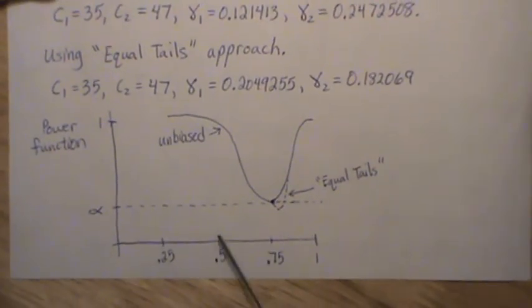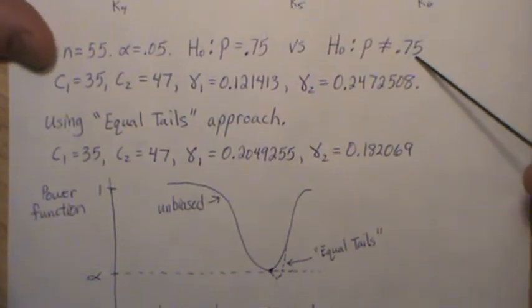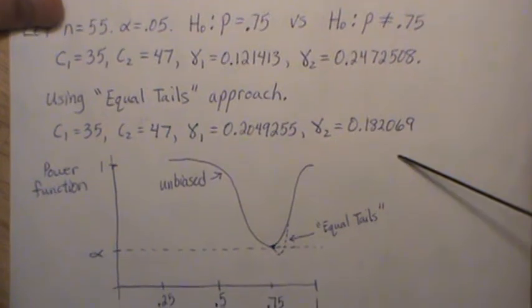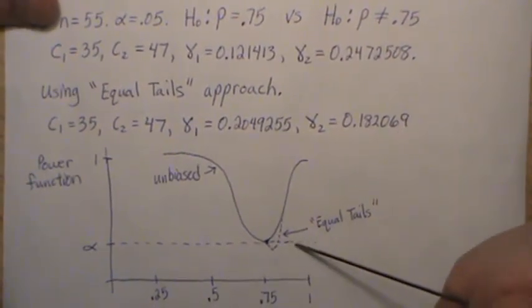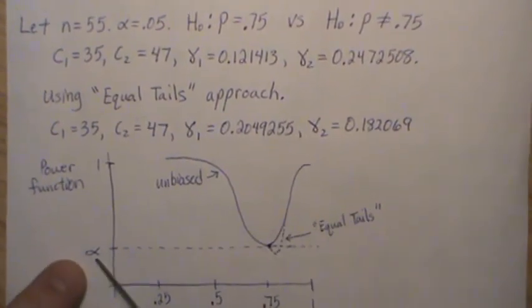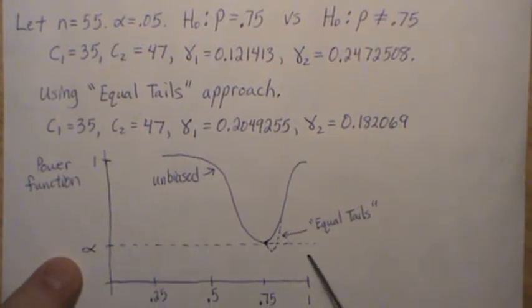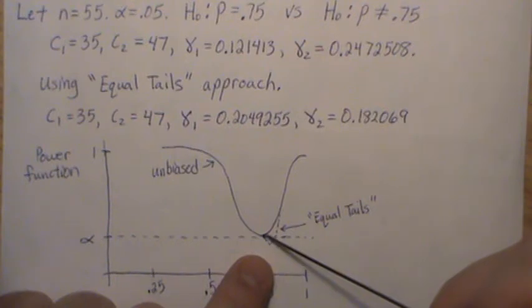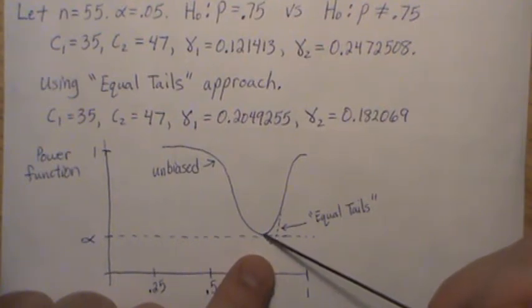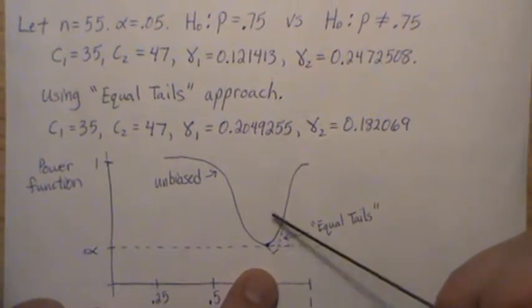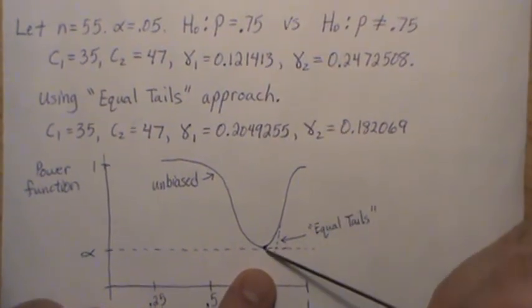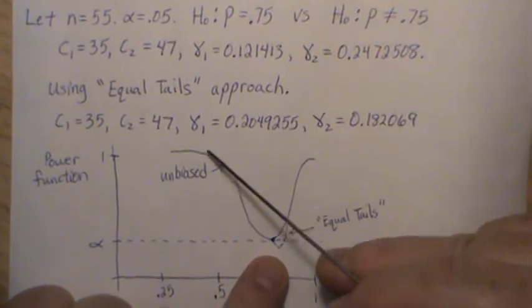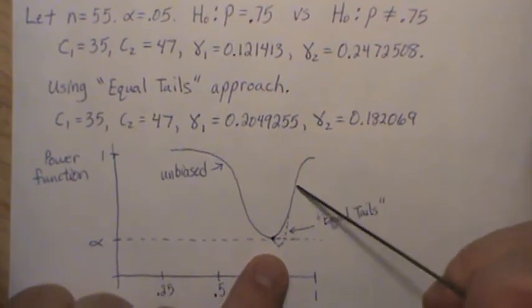Now, if we were to draw a power curve for both of these settings, the uniformly most powerful unbiased and then the approximate uniformly most powerful unbiased, this is what we get. This is the alpha level. And what does it mean to be unbiased? It means under the null hypothesis you're at most alpha, and the null hypothesis in this example is only a point. So that's alpha. And to be unbiased, it means in alternative you have to be greater than or equal to alpha. So that is what this curve, and this is the power curve.